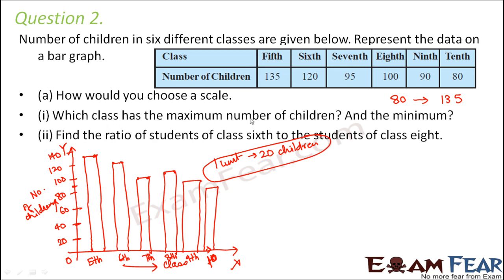The next question is, which class has the maximum number of children? By looking at the bar graph itself, we can say that class 5th has the maximum number of children. And which class has the minimum number of children? That also is very evident. That is class 10th.